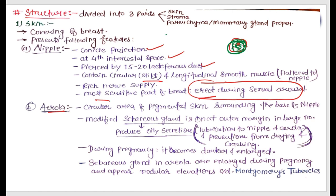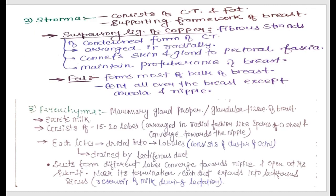Just like your lips, which are a very pigmented area that can dry and crack, the sebaceous glands produce oily secretions to prevent the nipple from cracking and drying. During pregnancy, the areola becomes darker and enlarged, and the sebaceous glands appear as nodular elevations called Montgomery's tubercles.